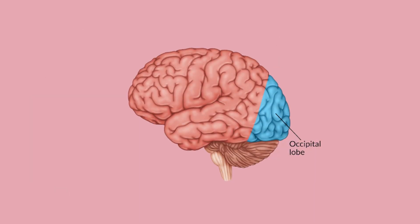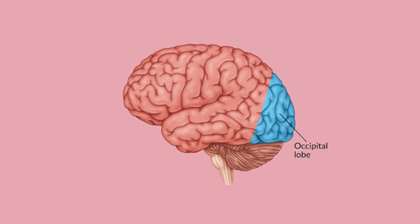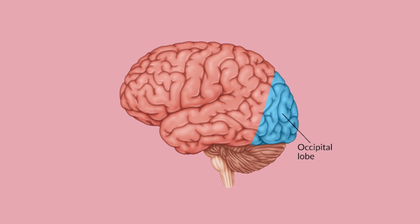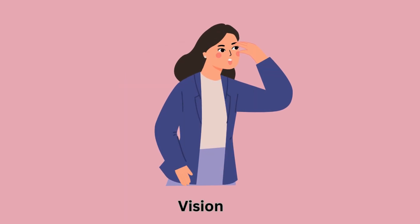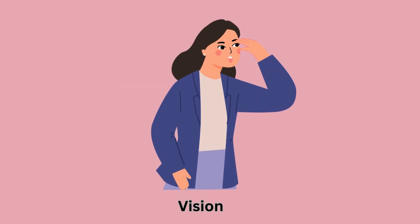Lastly, the occipital lobe, at the back of the brain, is primarily involved in vision. It helps us understand what we see around us.